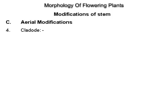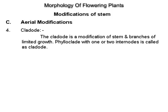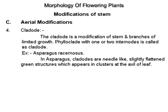The cladode is a modification of stem and branches of limited growth. A phylloclade with one or two internodes is called a cladode. Example: Asparagus racemosus. In Asparagus, cladodes are needle-like, slightly flattened green structures which appear in clusters at the axil of the leaf.